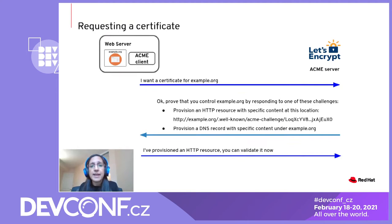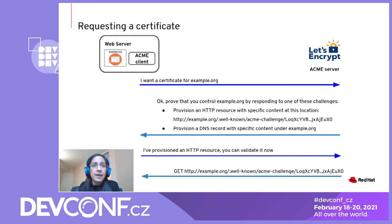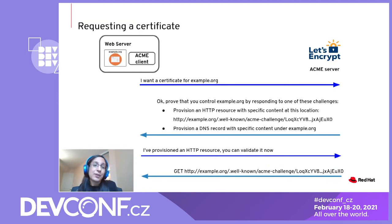In our example, our ACME client provisions the HTTP resource and lets the ACME server know that it can go ahead and try to access this resource. The ACME server then issues a GET request for this HTTP resource and verifies that the response contains the expected content. If it does, the ACME server knows that the web server really does control example.org.